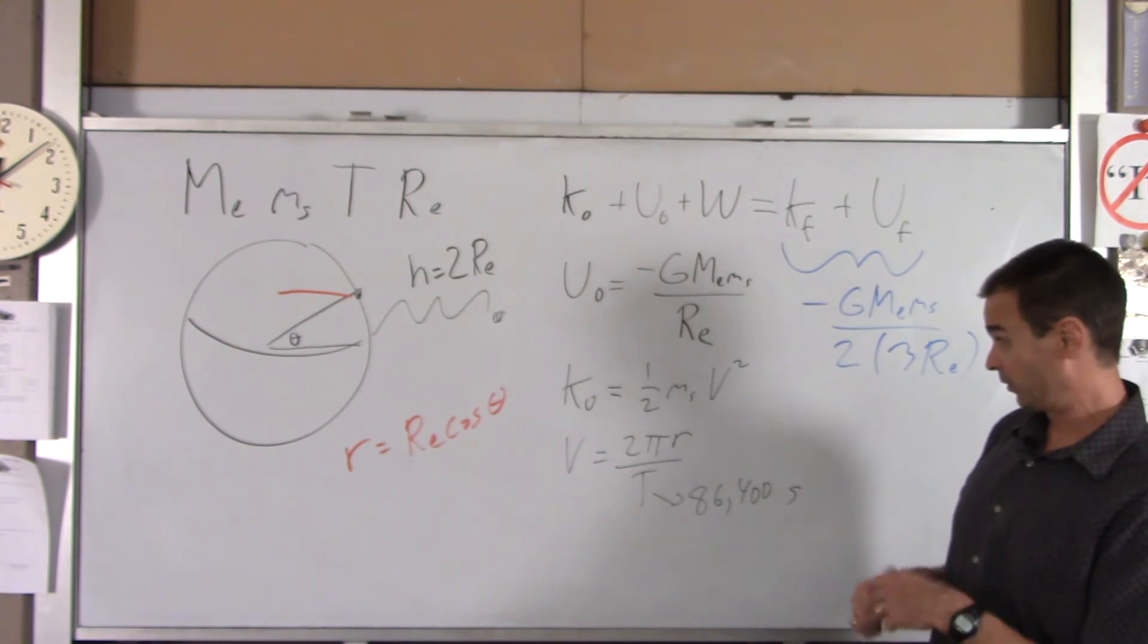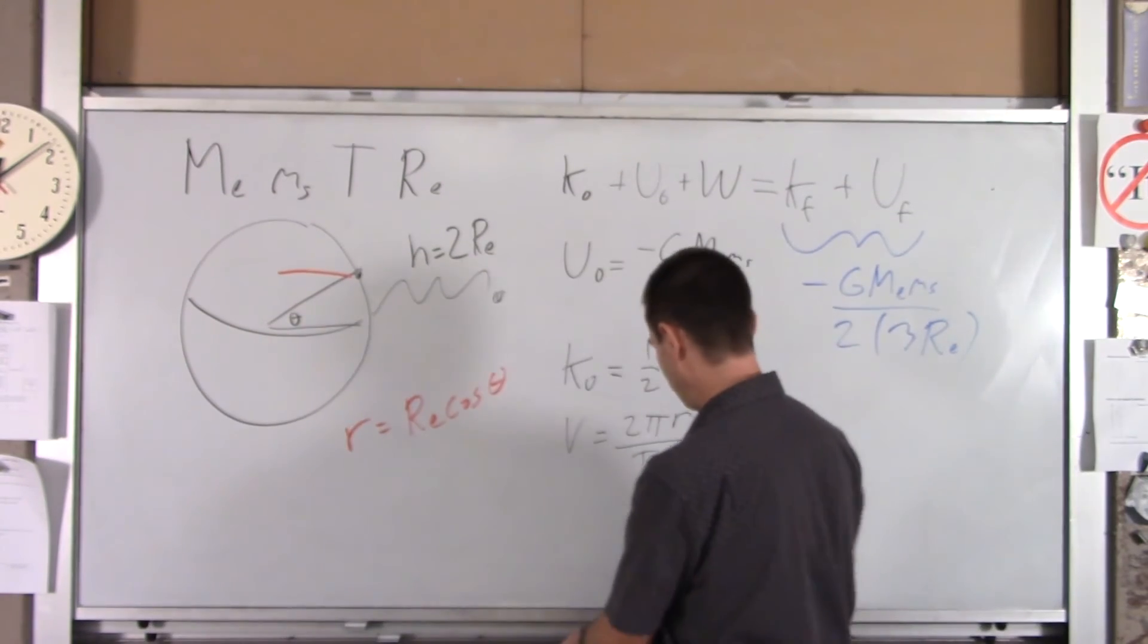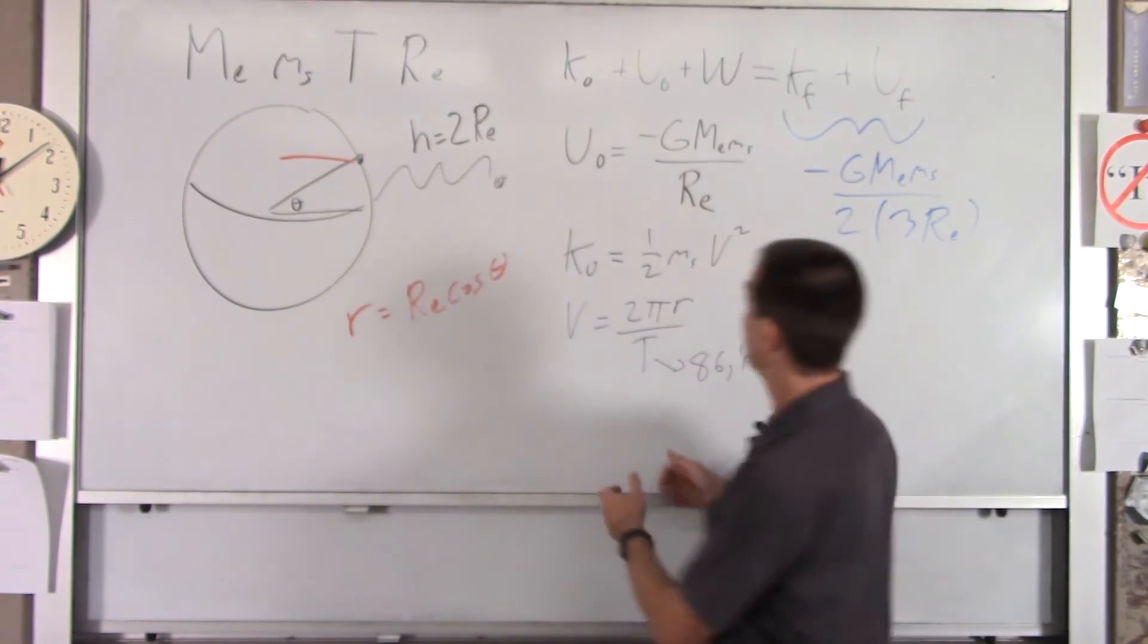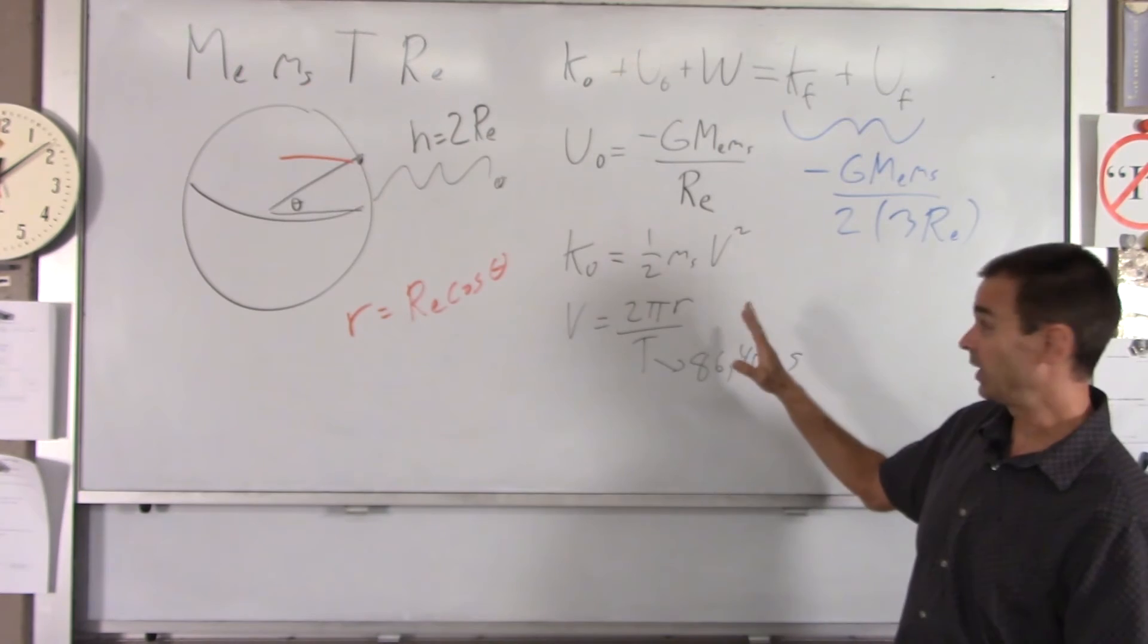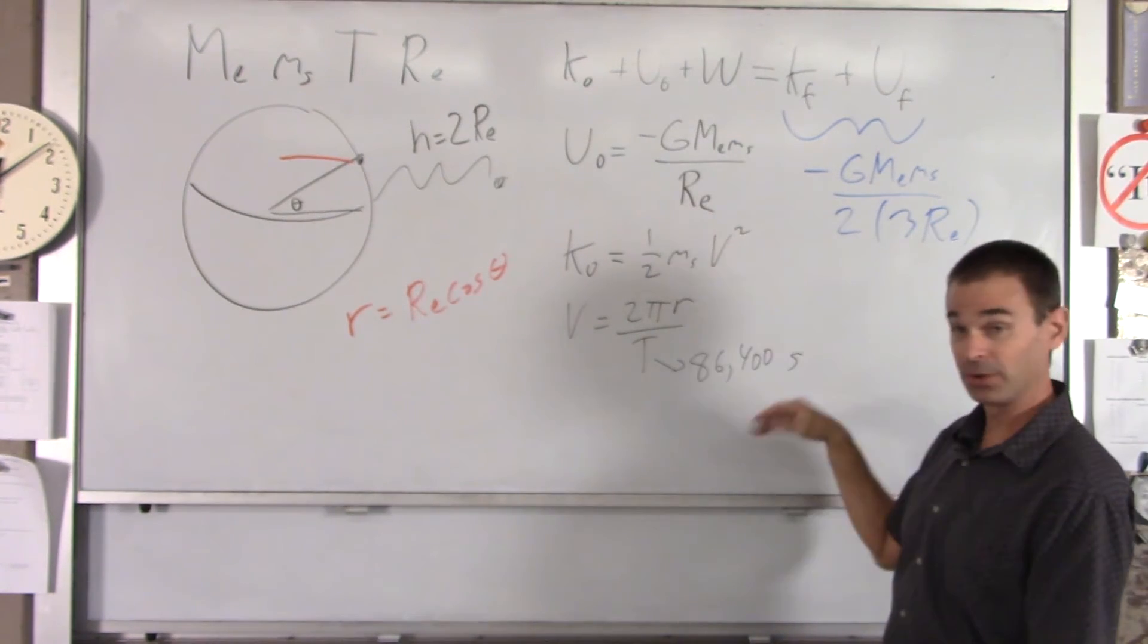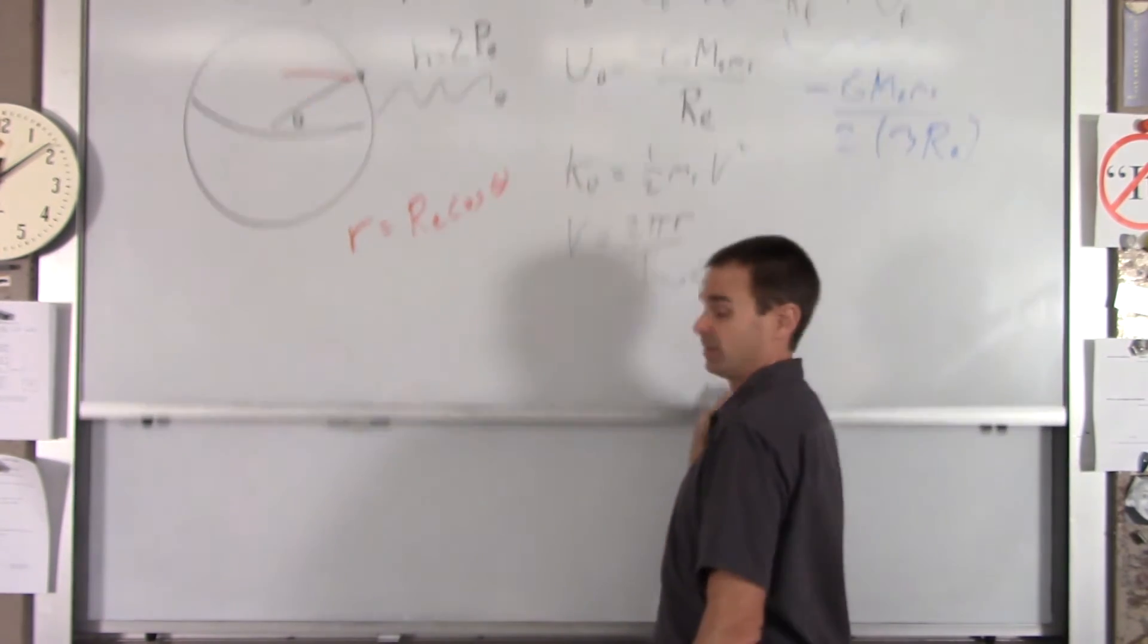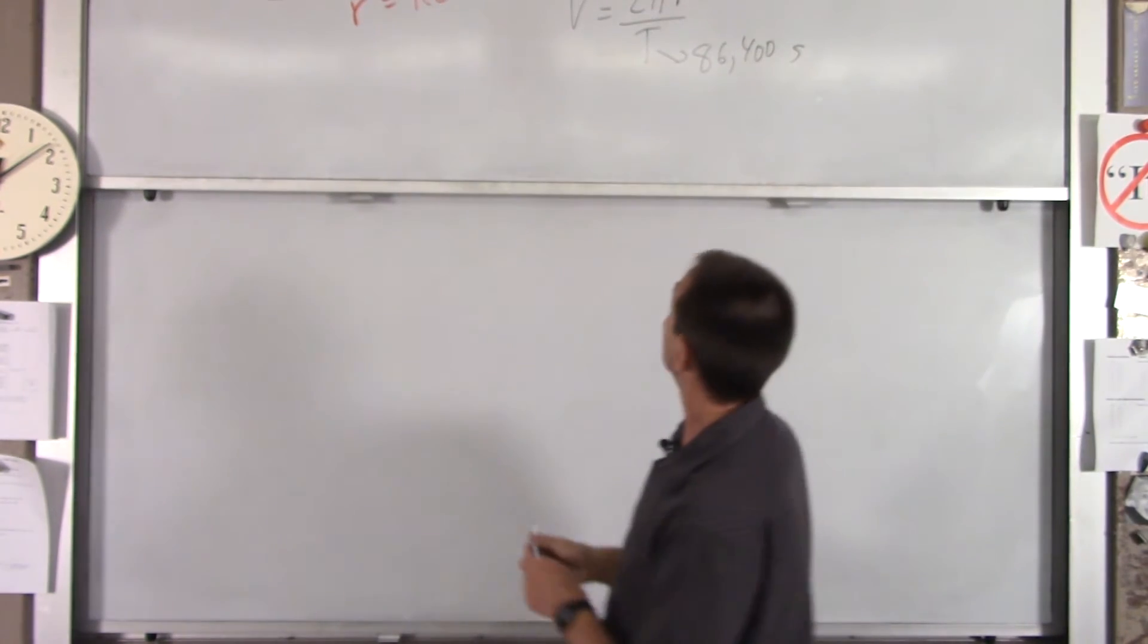So I basically got all my terms. All I got to do now is do a little bit of math and solve. So I'll plug each of these things in. By the way, this was all the work. Figuring this out, figuring that out, figuring this out, figuring that out. That's all the hard stuff. Now we're just going to do a little bit of math to get w.